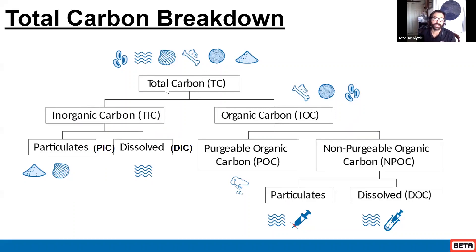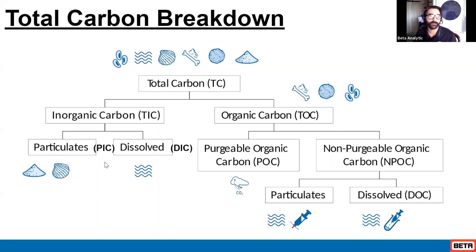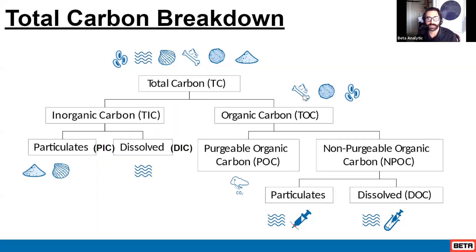What we have in our hand can be broken down into two pools. Our inorganic carbon refers to the particulate carbons made up of carbonate — that's our sediments and shells, clam shells, foraminifera, and things like that. When we change the pH, that will then go into our inorganic dissolved pool: bicarbonates, carbonates, and CO₂.